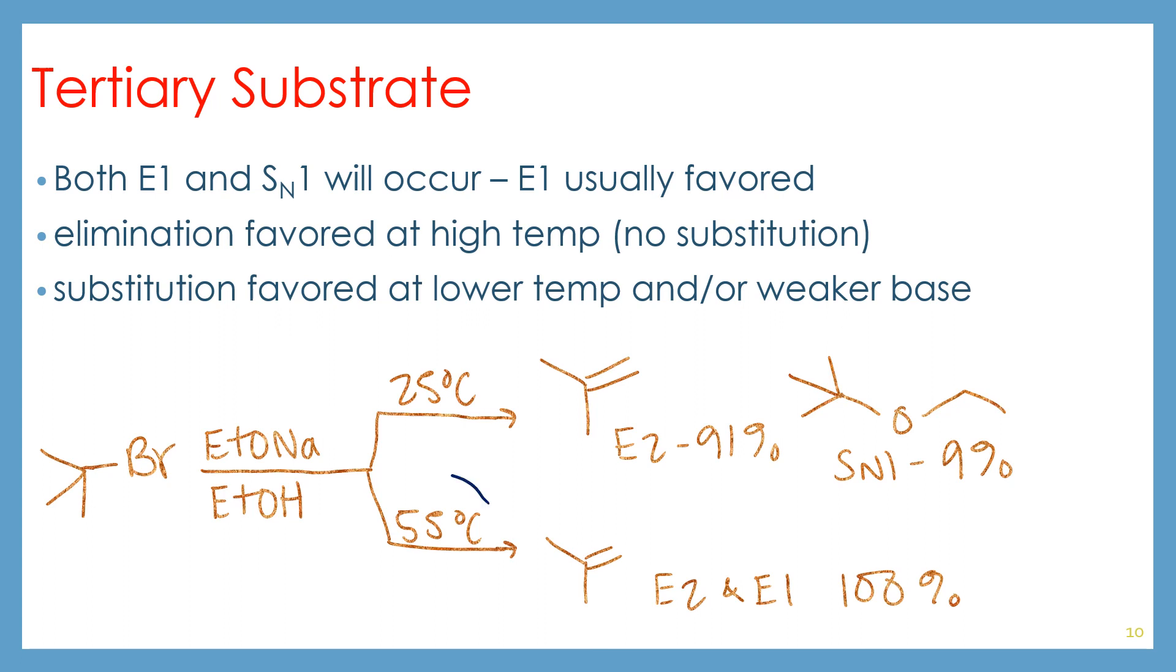But if we bump the temperature up to 55 degrees, we will see primarily elimination, actually 100% elimination, although the mechanism is unclear. It's impossible to tell the difference between the E2 and E1 products here.